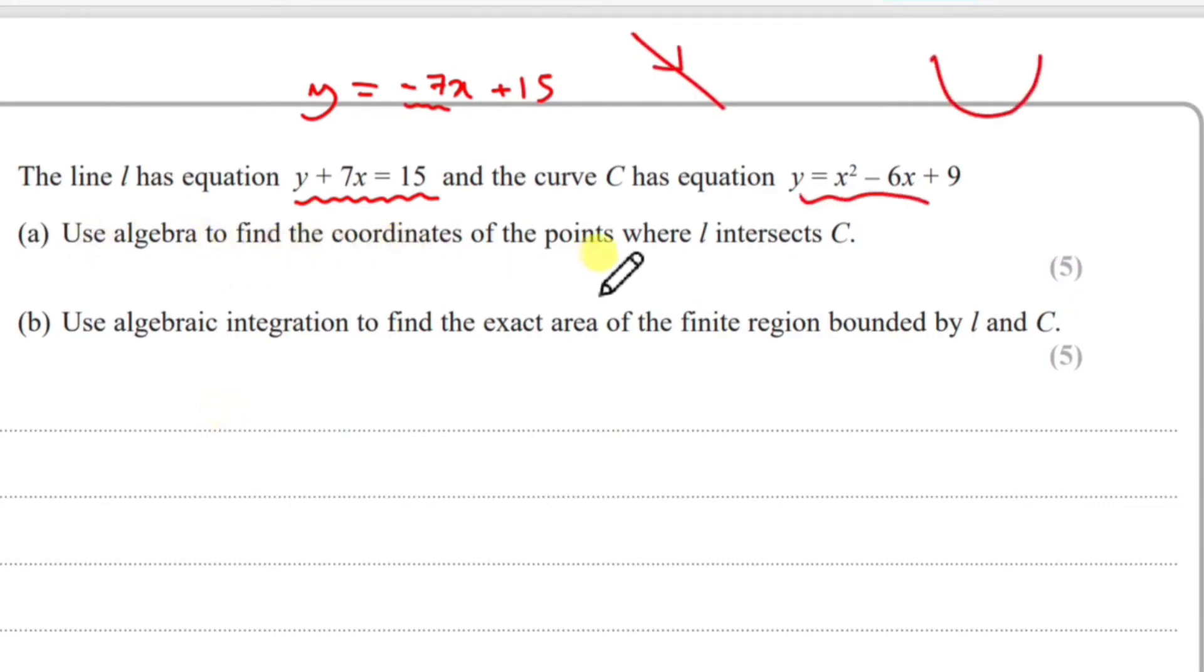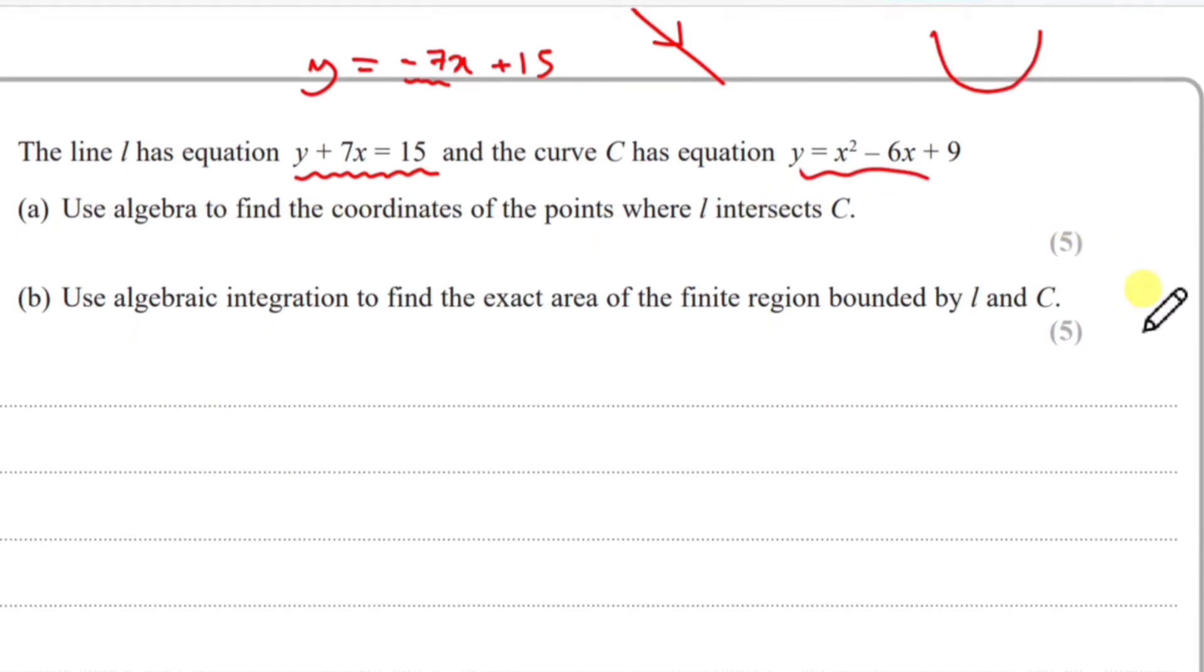Use algebra to find the coordinates of the points where L intersects C. So you're going to have a line that intersects the curve at two points, probably here and here. To do it, all you do is substitute your line equation into your quadratic.